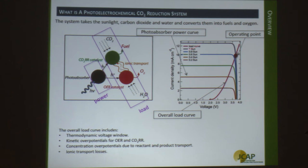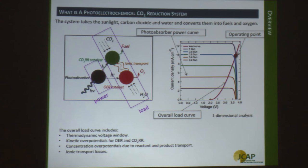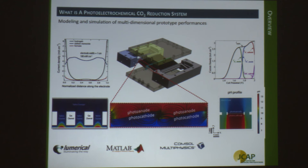Once you have the overall load curve and the power curve, that determines the operating point of the system. The current density readout gives you the overall fuel generation rate. All physicochemical processes must be well coupled together to produce device efficiency — you cannot have one rate going faster than another. It's a one-dimensional analysis, but for a prototype device with finite dimensions, you really want a multi-physics, multi-dimensional model to fully predict cell performance.